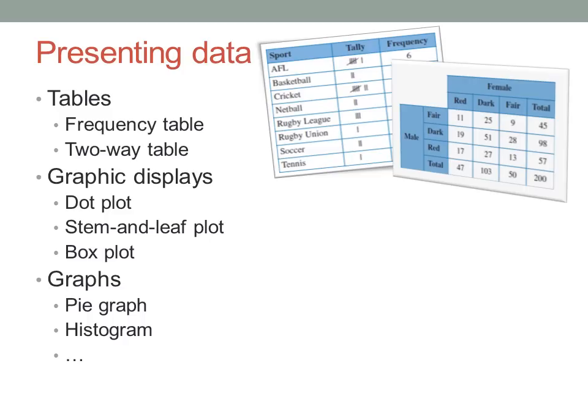A two-way table, sometimes called a contingency table, is a way of presenting data when there are two different ways of looking at it. For example, this table shows data for the hair colour of married couples.